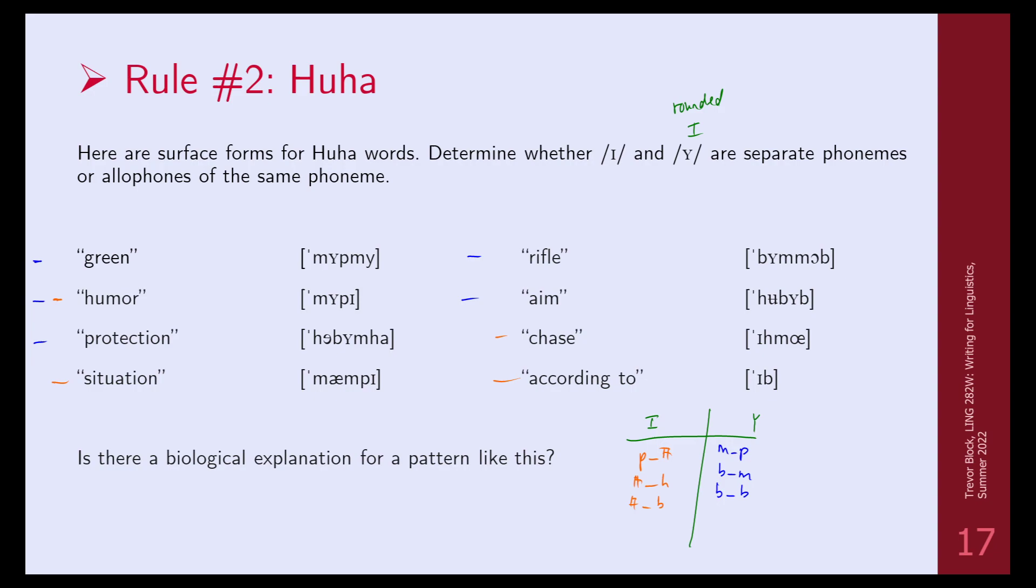Do we have allophones here? I don't see any overlapping environments. But what I do see for y is that it's between bilabials. And then in the i case, that would be our elsewhere, since it's not between any bilabials. So we can claim that there is some allophony here. There's no repeated meanings, they have different environments, and these are closely related sounds, so the only difference is rounding.